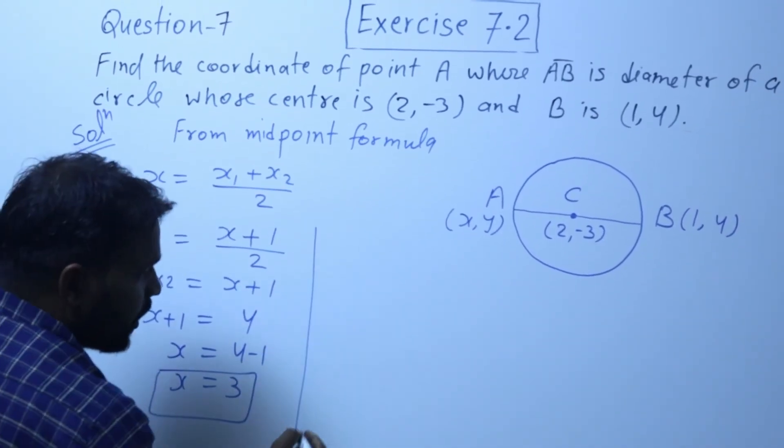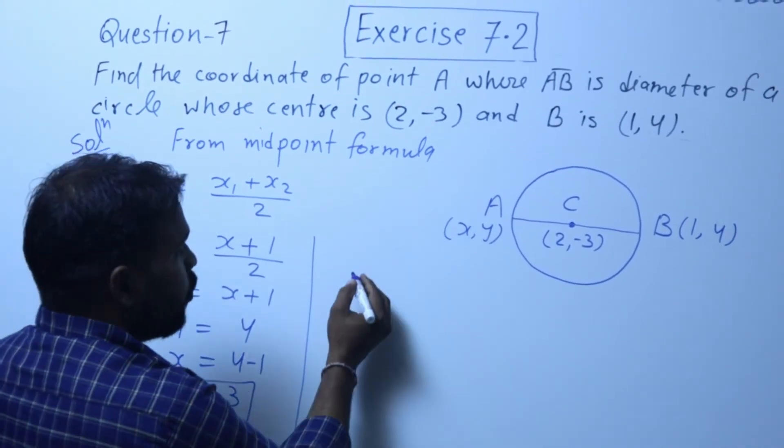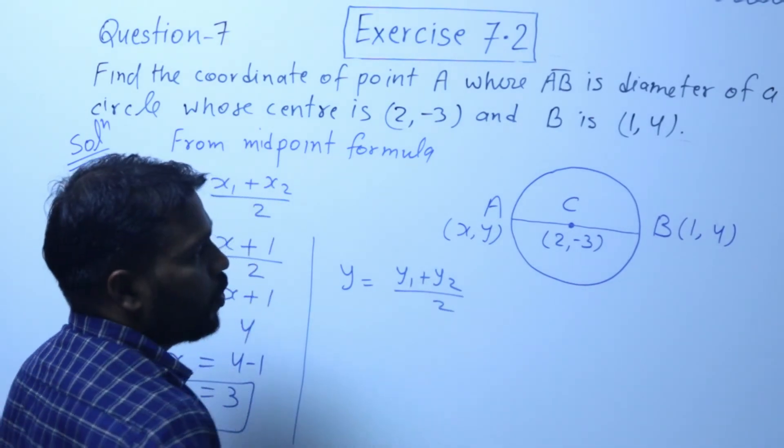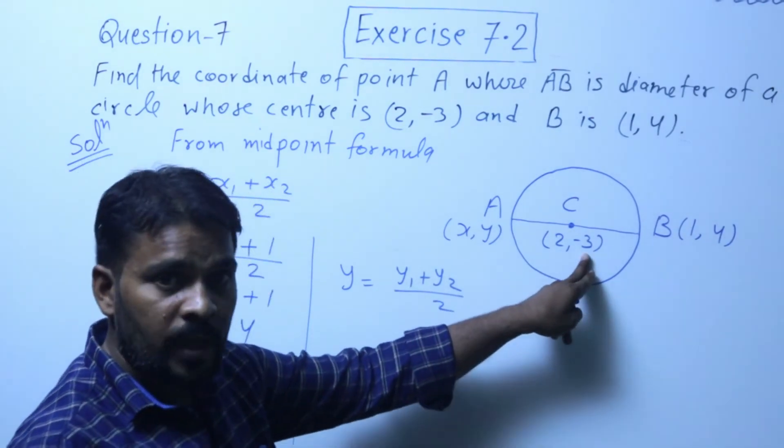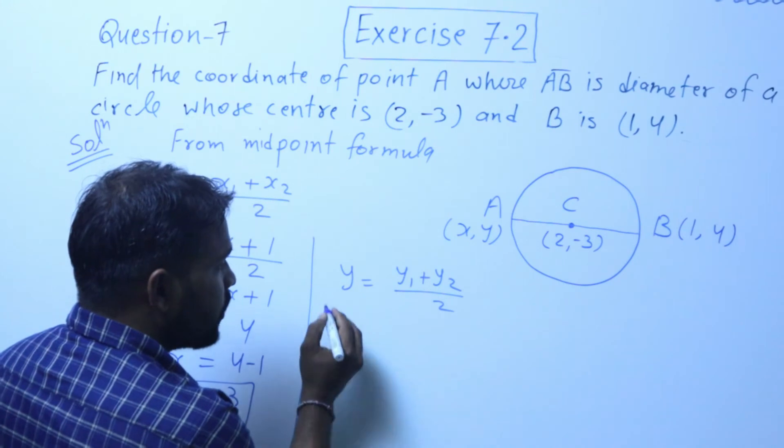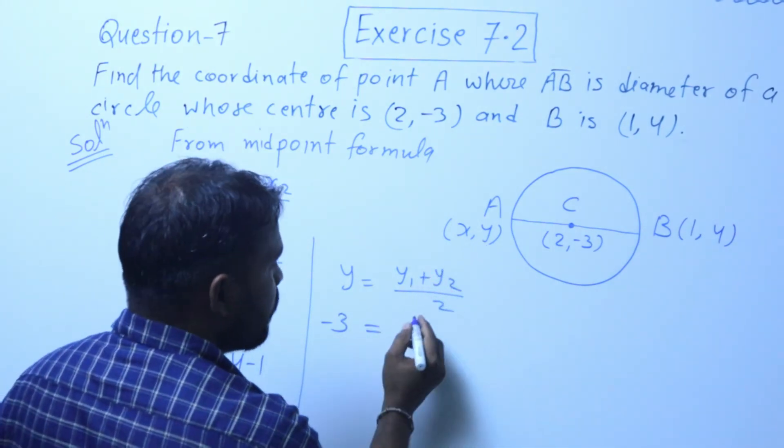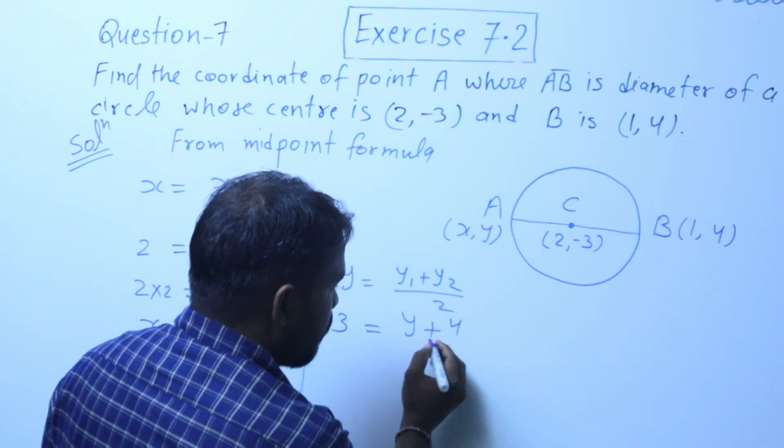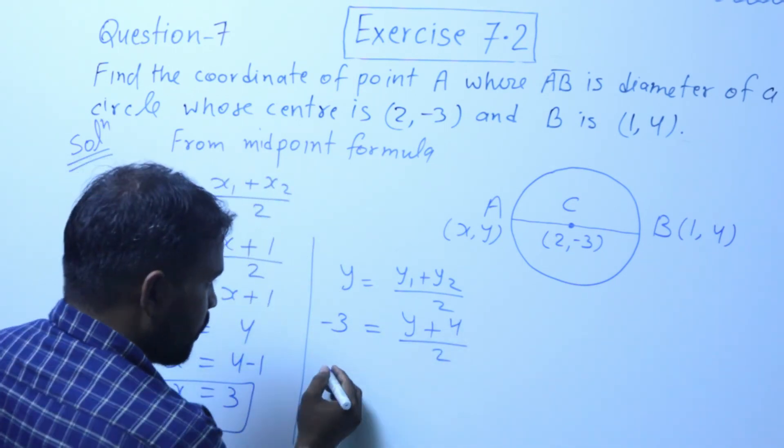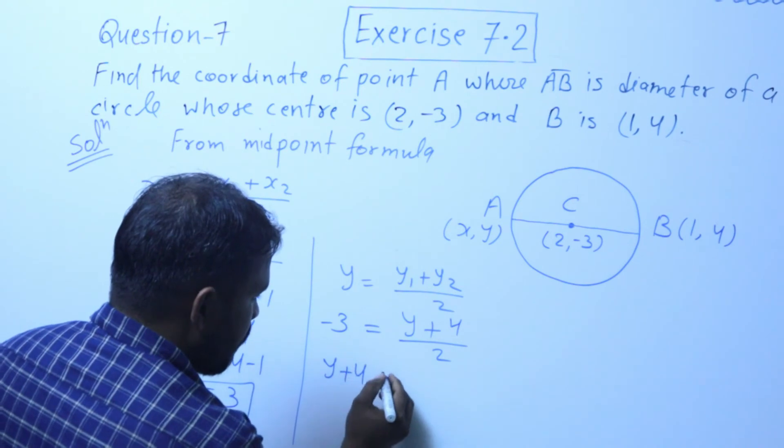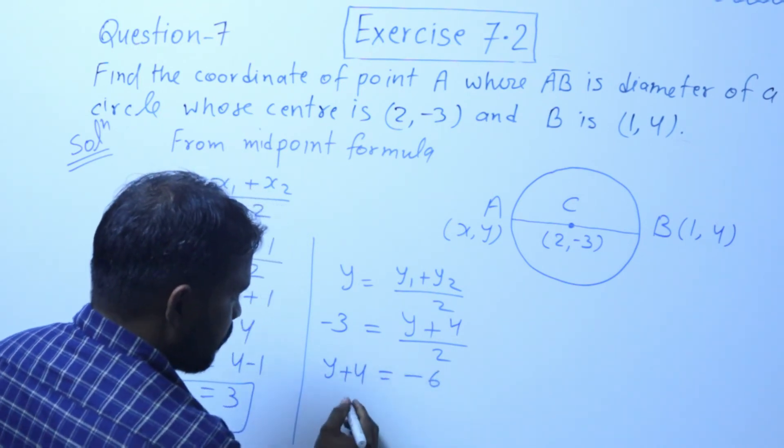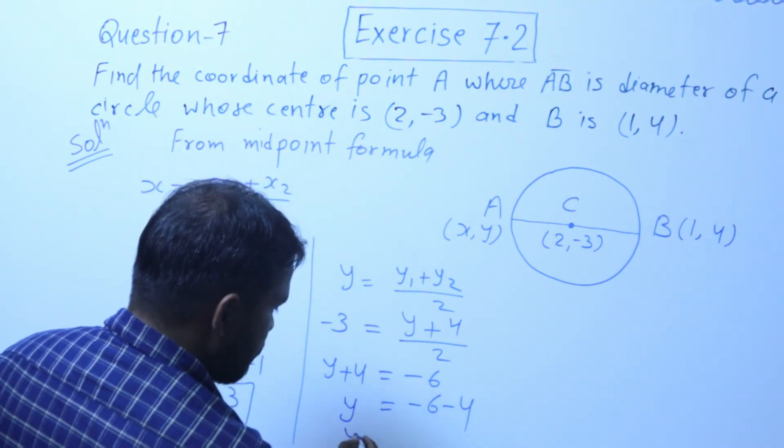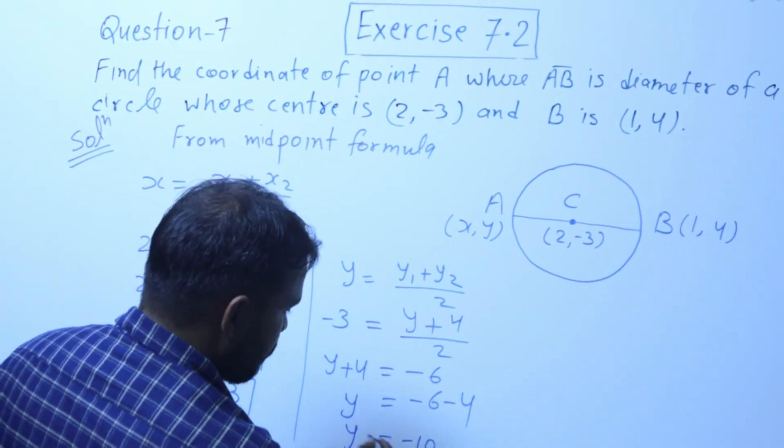Same way, in midpoint formula, y = (y₁ + y₂)/2. So here y's value is -3. -3 = (y + 4)/2. Cross multiplying, y + 4 = -6, so y = -6 - 4. Thus y = -10.